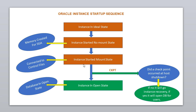The next state is the instance in mount state. Mount state means your Oracle instance is connected to the control files. Whenever the instance is in a mount state, the Oracle instance is already connected with your control files.